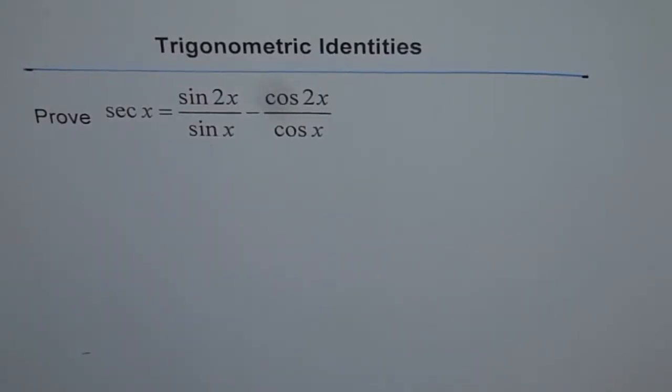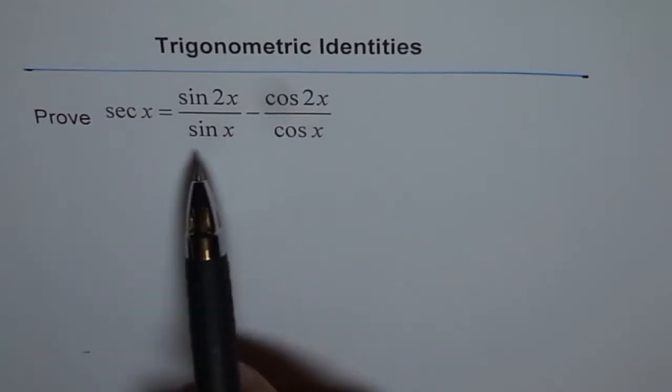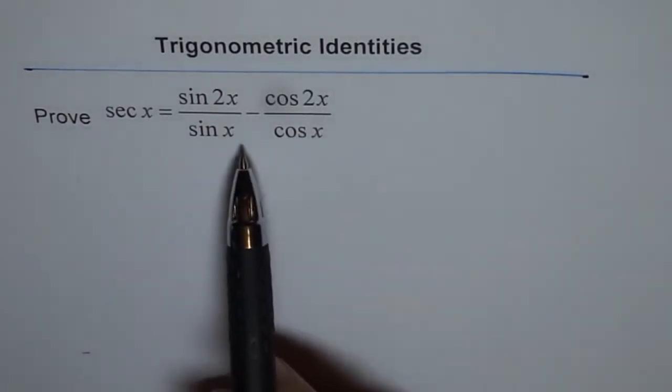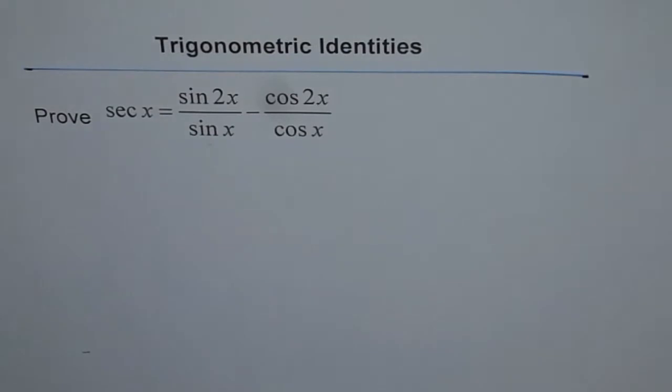Trigonometric identities. Prove secant x equals sin 2x divided by sin x minus cos 2x divided by cos x.